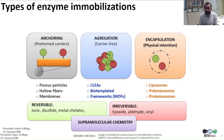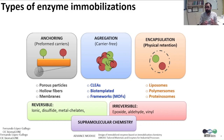The third type of immobilization is enzyme encapsulation, where the enzymes are physically retained into different materials. This is normally a self-assembly process where enzymes can be encapsulated either into liposomes — where the material is based on lipids — or polymersomes — where the material is based on synthetic polymers — or proteinosomes, where the material is based on proteins or protein vectors.